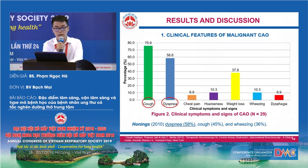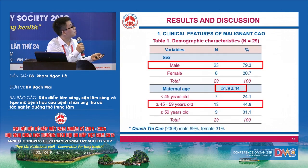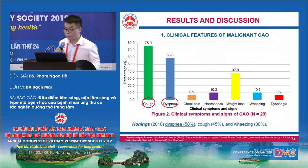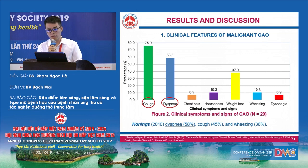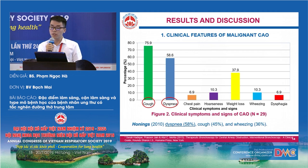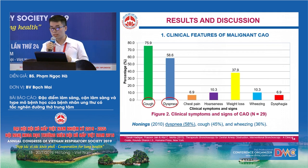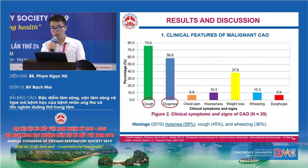Regarding clinical symptoms, cough is the most common symptom. This result differs from the Horny study, where dyspnea accounted for 58%. Dyspnea usually occurs when the degree of stenosis reaches 75% decrease in cross-sectional area. However, in our study, the number of severe CAO patients is less than in other groups, which may explain the difference between the two studies.